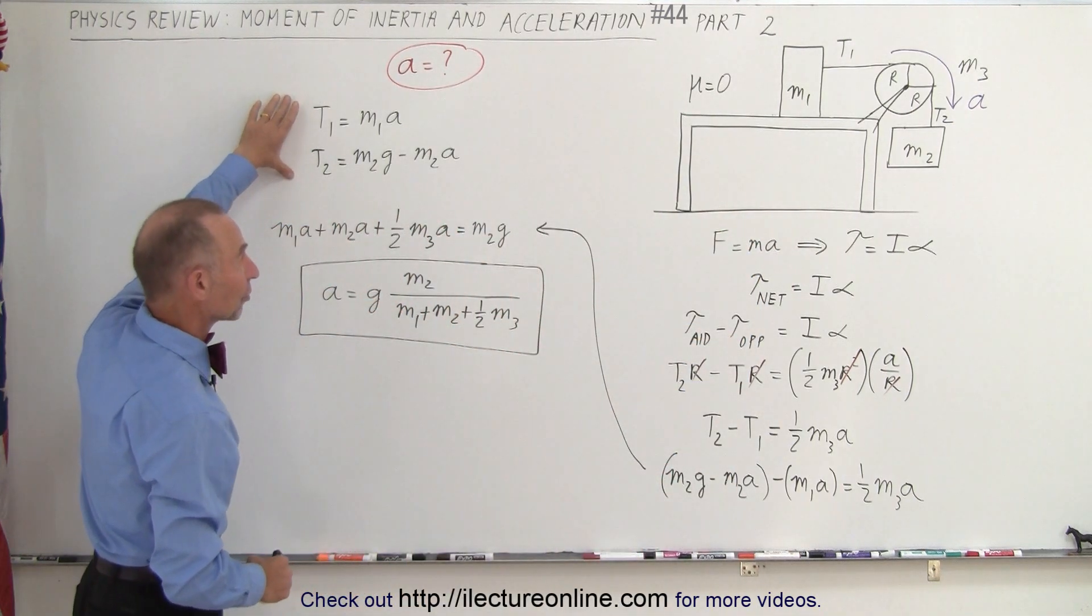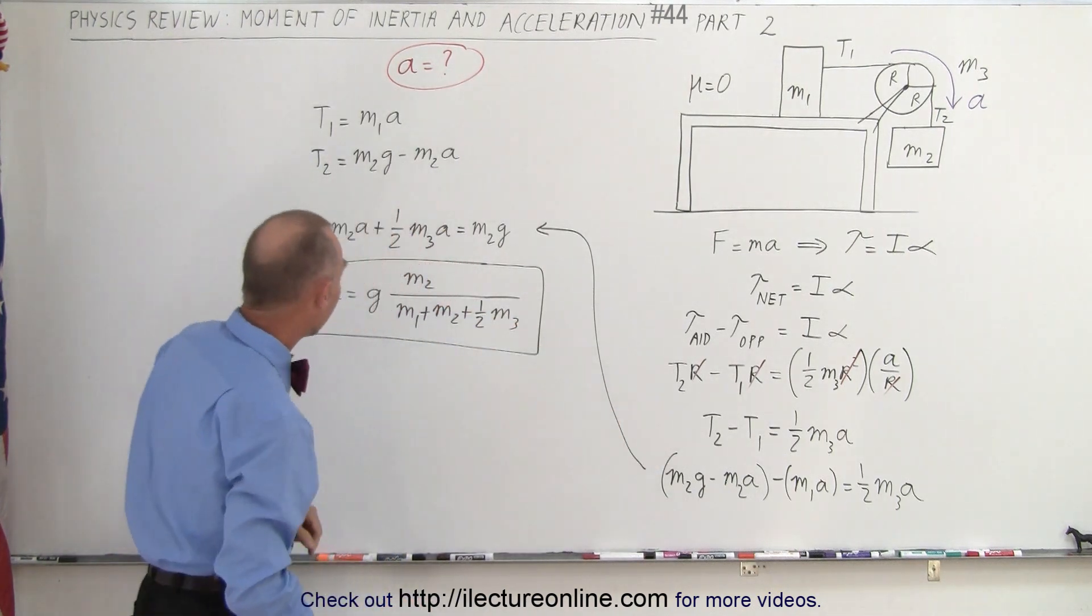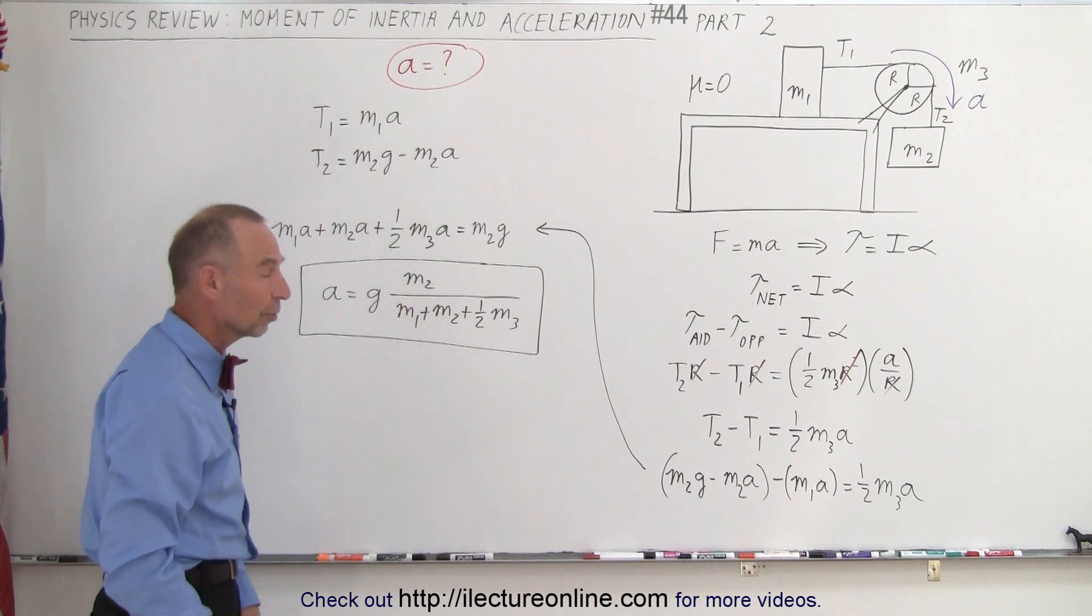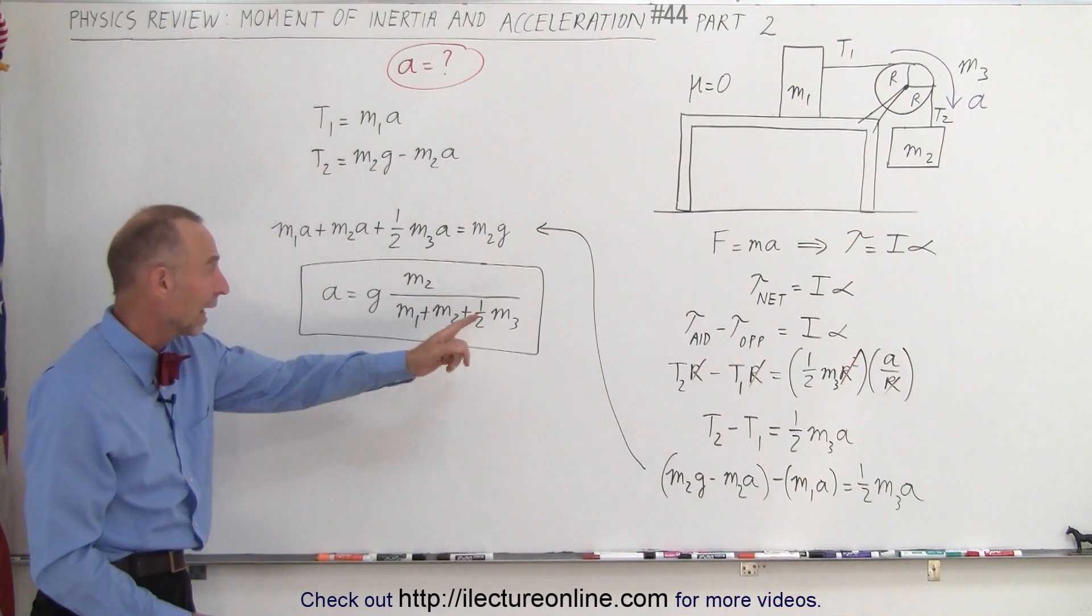Here we show what the tensions in the strings are equal to. Then we just simply plug that in, and notice we solve for A being G times those ratios, the ratio of M2 over the sum of M1, M2, and half of M3.